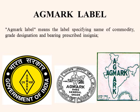The AGMARK label is a label specifying the name of the commodity. Whichever product is going to be marketed, it should have a specific name, and that should be specified along with grade designation. Depending upon the quality of a product, several gradings will be provided by AGMARK. It has to be designated on the label and should bear a prescribed insignia, that means a logo.